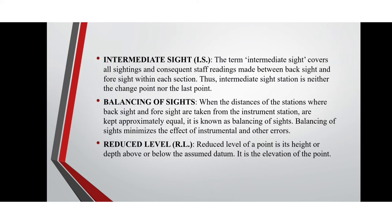Intermediate sight: the term intermediate sight covers all sightings and consequent staff readings made between the back sight and the foresight within each section. Thus an intermediate sight station is neither the change point nor the last point. Balancing of sights: when the distances of the stations where back sight and foresight are taken from the instrument station are kept approximately equal, it is known as balancing of sights.